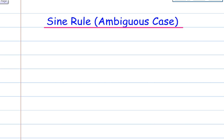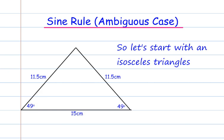Sine rule, the ambiguous case. Let's start with an isosceles triangle. The two matching lengths are 11.5cm, the two matching angles are 49 degrees, and the base is 15cm.